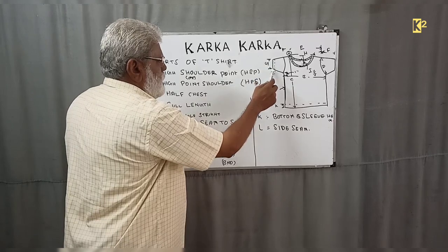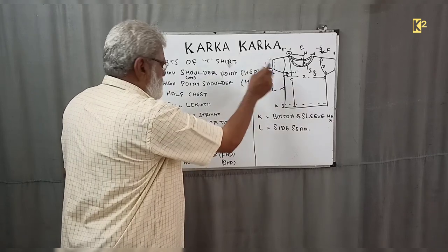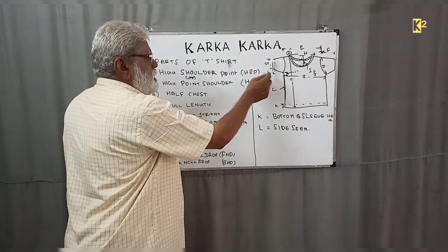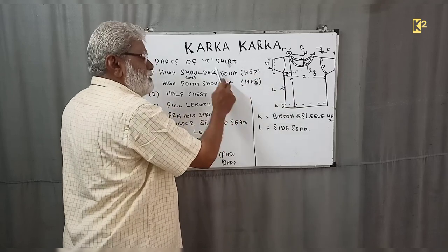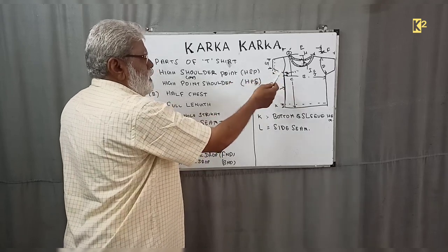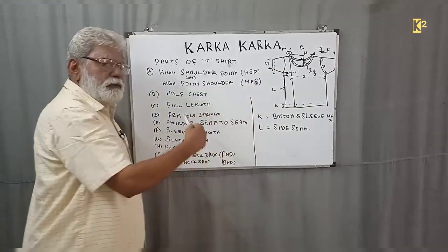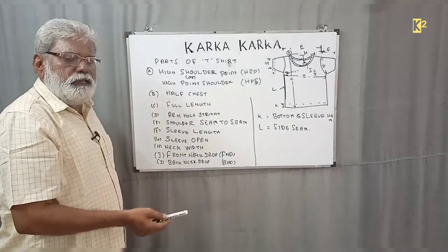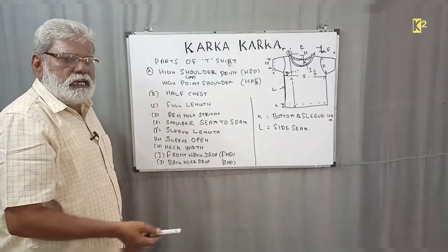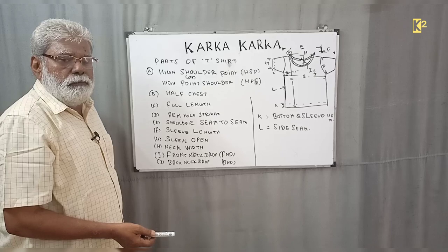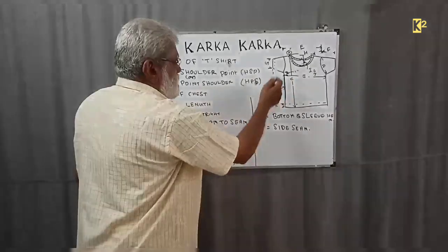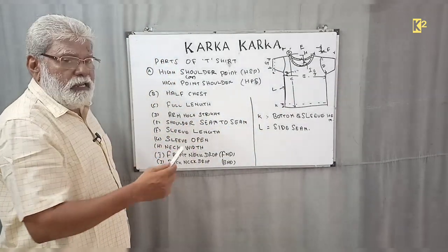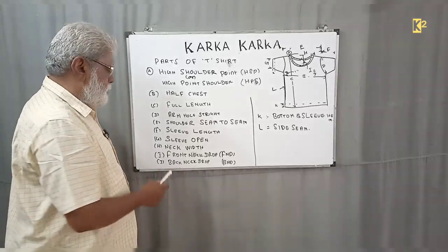Sleeve open refers to the opening measurement of the sleeve. If the sleeve length is full, it is a full sleeve; if half, it is a half sleeve; and a short sleeve is also a style. Sleeveless styles also exist. So the length of the sleeve indicates the style — whether it is full sleeve, half sleeve, short sleeve, or sleeveless.